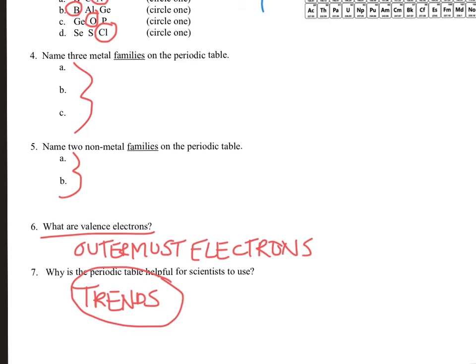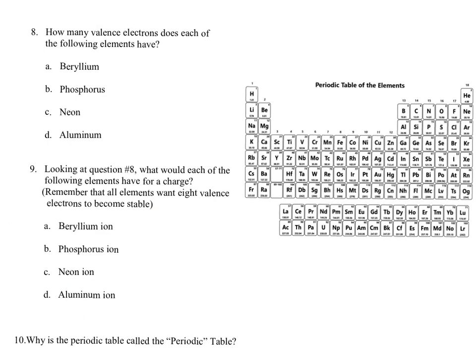Questions eight and nine focus on valence electrons and charge. Valence electrons go in order: one, two — skipping the transition metals — then three, four, five, six, seven, eight.